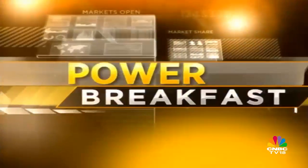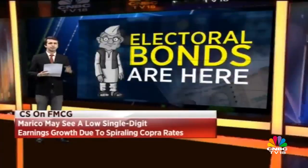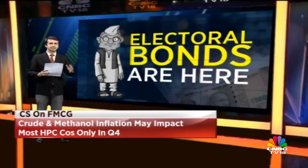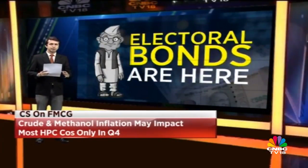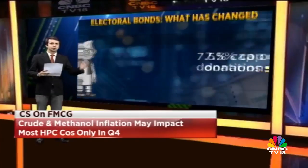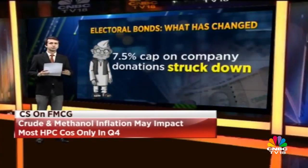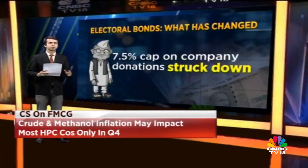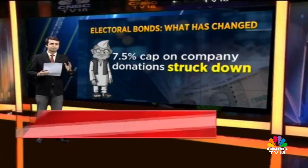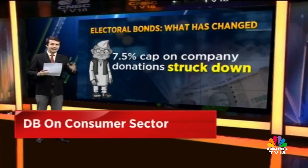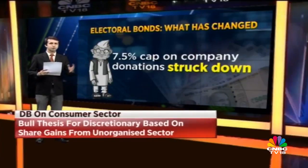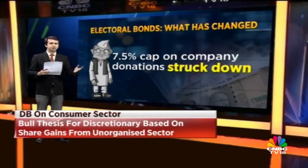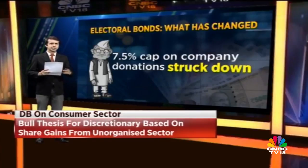The electoral bond system will bring four big changes to the current system of political funding in India. Firstly, the cap on the amount of money a corporate can donate to political parties will be removed. Earlier, companies could only donate up to 7.5% of the average of their net profits over the last three years, but an amendment to the finance bill has removed this restriction.